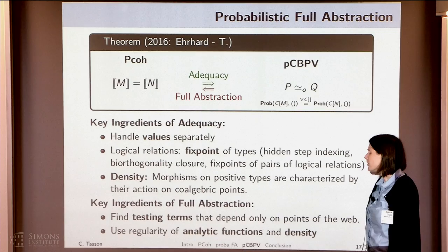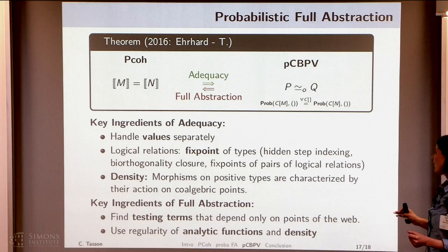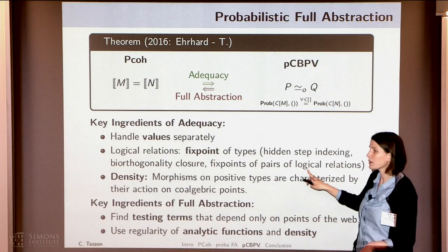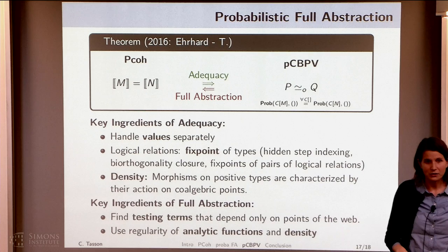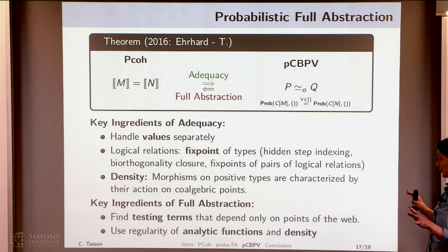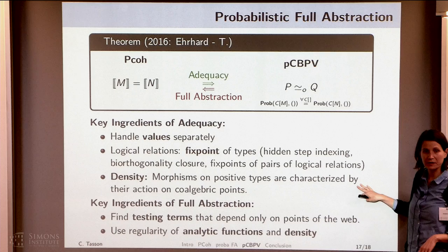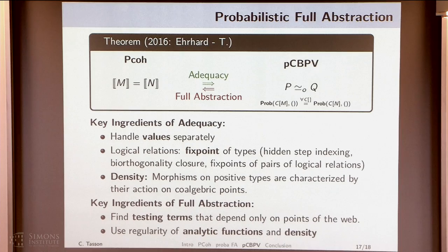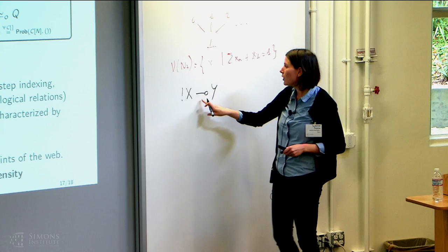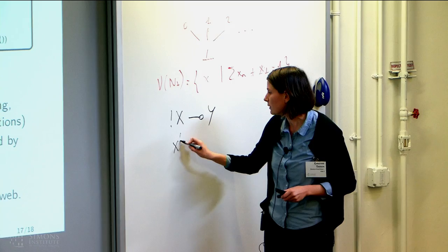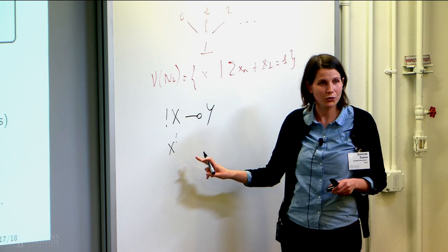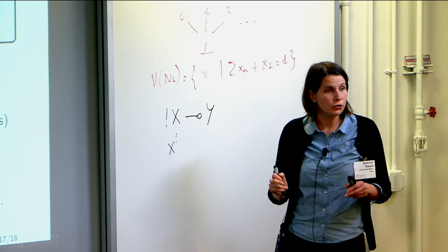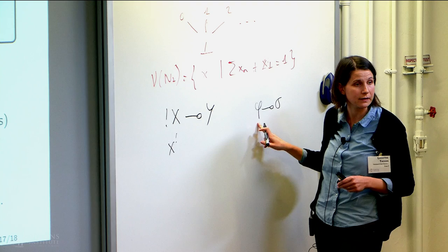We had to combine many tools such as step indexing, orthogonality, and fixed points of pairs of logical relations. The crucial ingredient is the density theorem. Functions of type bang X to Y — to know them, we only have to test them on exponentiations of points, because of density. These points are co-algebraic points. The same holds for other positive types: to know a function from a positive type to a general type, I only have to test it on the co-algebraic points. That is really the key ingredient of the proofs.